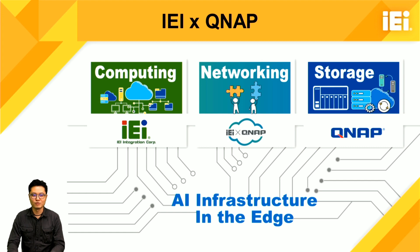Before we introduce the new product, let's talk about why IEI designed it. IEI is a leading company in hardware design, and QNAP is one of IEI's group companies with strong software capabilities. Due to AI chip capabilities getting stronger and AI algorithms achieving higher accuracy than ever, we expect AI demand will increase dramatically in the future. That's why IEI cooperates with Intel to design AI acceleration cards, while QNAP invests lots of resources to focus on the AI industry.